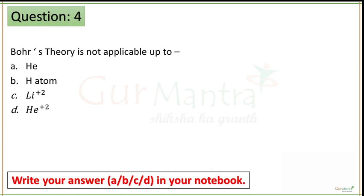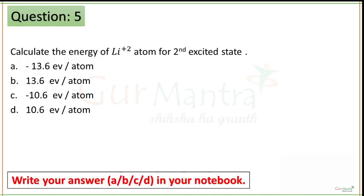Last 30 seconds. Time up. You have been asked about which species Bohr's theory is not applicable to. As you know, Bohr's theory is only applicable to mono-electronic species. So the correct answer is option A — Helium, which consists of two electrons. Next question is question number 5 — please solve it quickly and note your option in your notebook. Your time starts now.